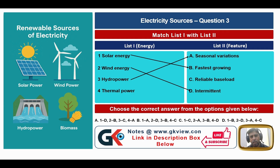Hydro power matches with A — seasonal variations — because it depends on rainfall; if there is more rainfall, more water is stored in reservoirs and more hydro power can be generated. Thermal power matches with C — reliable base load — because as long as coal supplies are available, thermal power is a reliable base load. The answer is D: 1-B, 2-D, 3-A, 4-C.